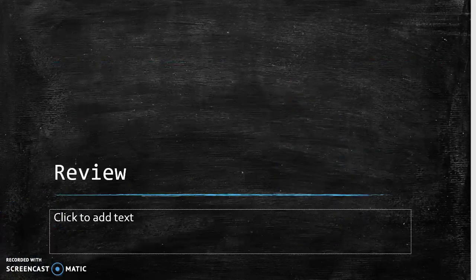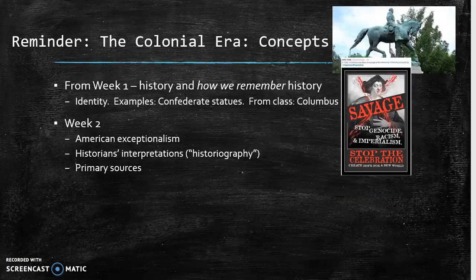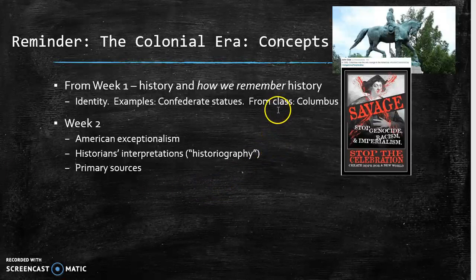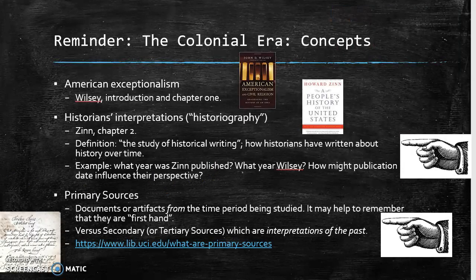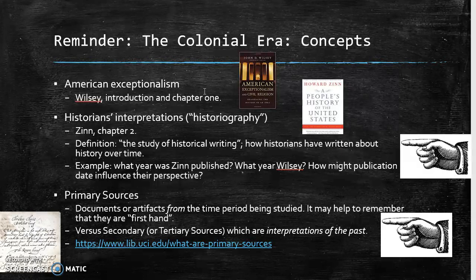Before we get to this week's theme, I'm going to do a little bit of review. I have a lot of slides here — I'll go through them briefly but wanted to keep them for your reference. As a reminder, in week one we talked about history and how we remember history. In week two, we talked about American exceptionalism and historians' interpretations of the past. American exceptionalism is the idea deeply embedded in our culture that the United States is somehow exceptional, unique.